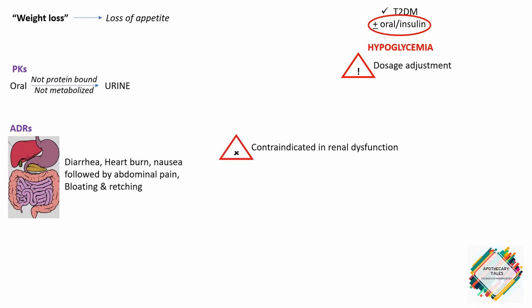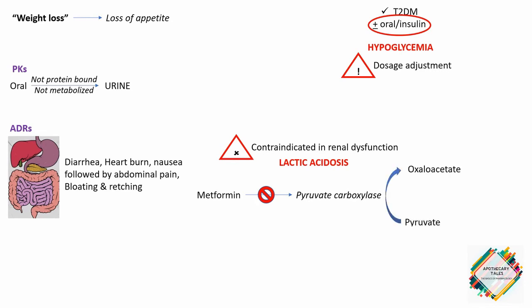Metformin is contraindicated in renal dysfunction due to the risk of lactic acidosis. This occurs because metformin blocks the pyruvate carboxylase enzyme, which is responsible for conversion of pyruvate to oxaloacetate. When this conversion does not occur, more pyruvate is available to be converted to lactate by lactate dehydrogenase. When more lactate is produced in an acidic medium, it gets converted to lactic acid, thus leading to lactic acidosis.